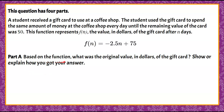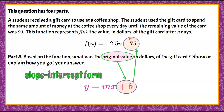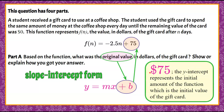Here's part A. Based on the function, what was the original value, in dollars, of the gift card? We recognize that this function is written in slope-intercept form, y = mx + b, where our original value is our b, or our y-intercept — the initial value of the function. That can be identified as the 75 in the function. So the initial amount this gift card was worth was $75. The y-intercept represents the initial amount of the function, which is the initial value of the gift card.